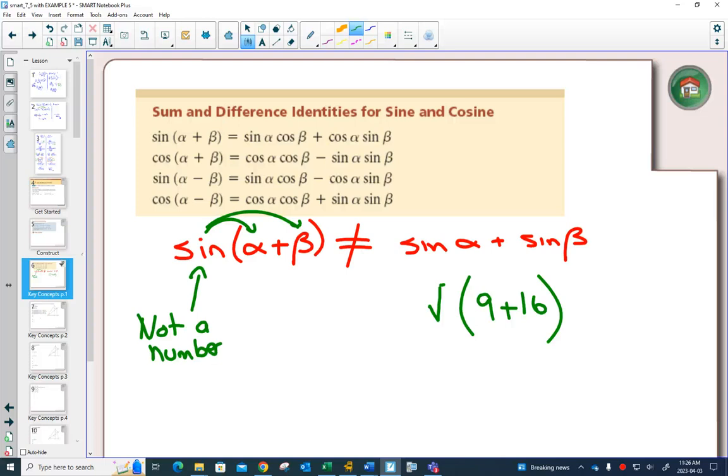But we have the same problem in old things like this. Sometimes students would go, oh, can I distribute this? No. It is not the same as the square root of 9 plus the square root of 16. We know this is the square root of 25, which is 5. This would be 3 plus 4. That would be 7. It is not the same.